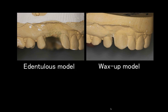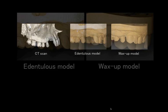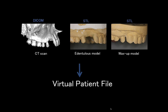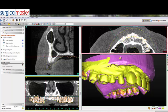I'm also going to have models taken of the edentulous site and also a duplicate model of the wax-up. I'm going to take all this data — the CT scan in DICOM form and the two models in STL form — and merge them together to receive the virtual patient file that can then be opened in the computer-guided software. I imported all this information into the Simplant software.